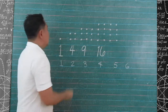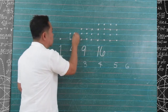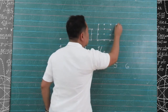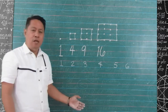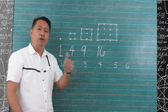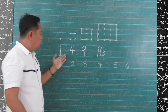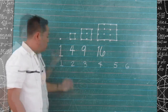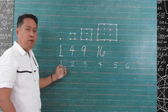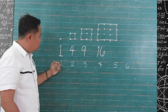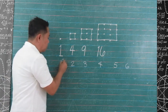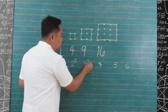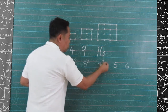Let us connect the dots. What shape is formed? Correct! We have squares. Actually, these numbers are called square numbers. When we say square numbers, we have to multiply the number by itself to get the square number. Let us have 1 multiplied by itself, 2 multiplied by itself, 3 multiplied by itself, and 4 multiplied by itself.